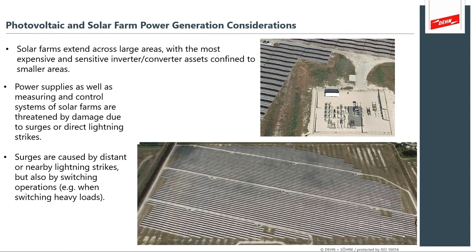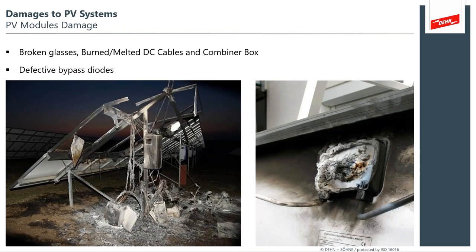Taking a general look at photovoltaic solar farms: you have these large spanning collections of solar panels intermixed with very key inverter and converter assets, and this all links back to the electric power grid. We have a situation where assets are spread across wide areas with large potential for direct lightning strikes, but there are other sources of damage too — indirect strikes, grid switching problems, and static buildup from exposed panels. The protection measures we cover are intended to provide thorough control of damage to these assets.